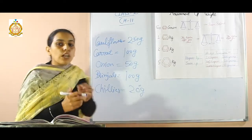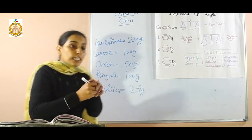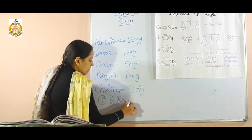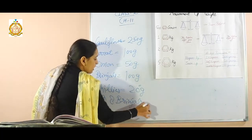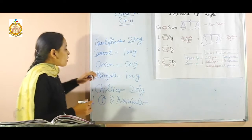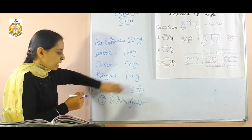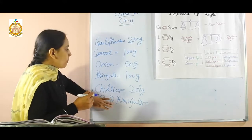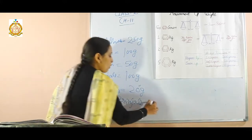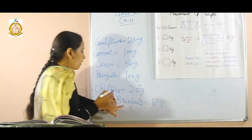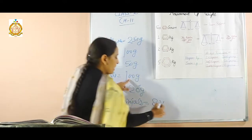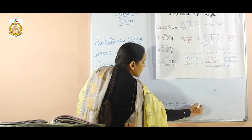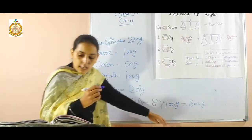Students, in the first sum, you have to find out the weight of 8 brinjals. The weight of 1 brinjal is 100 gram, so to find the weight of 8 brinjals, multiply 8 by 100 gram. That means 800 gram. This is the answer.